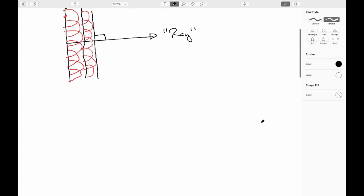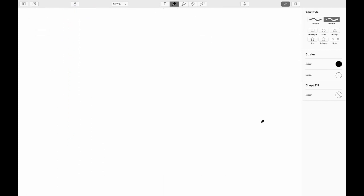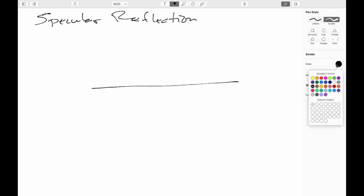Okay. So, the first thing we can look at is specular reflection. Specular just means you're bouncing off of some smooth surface. Like, let's say a piece of glass or something like that. So, here's a piece of the boundary of a piece of glass. We have a ray of light coming in.